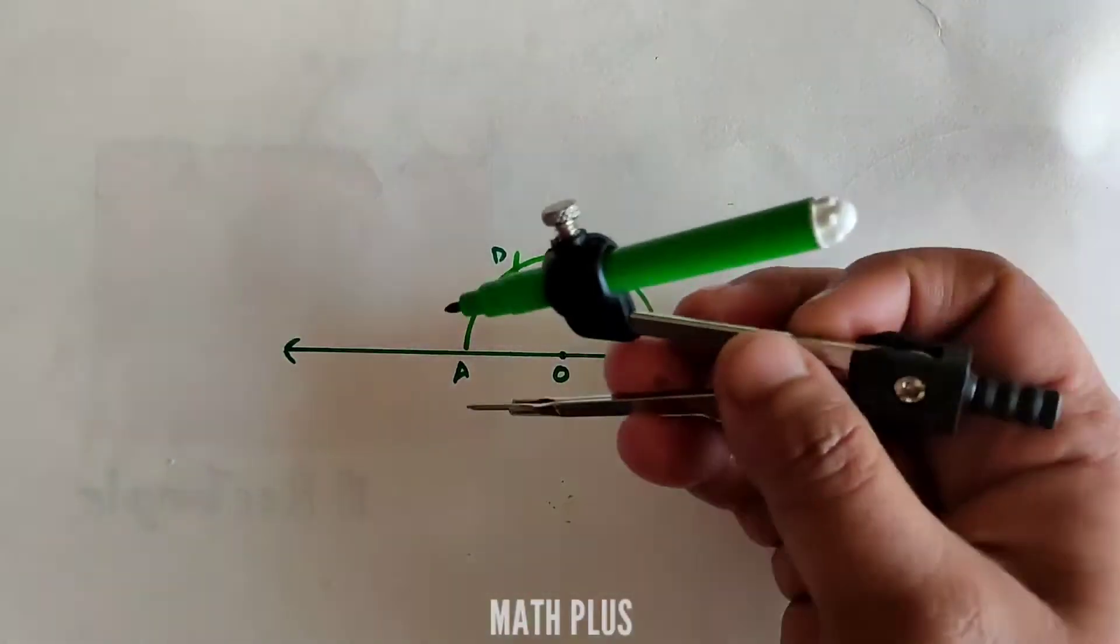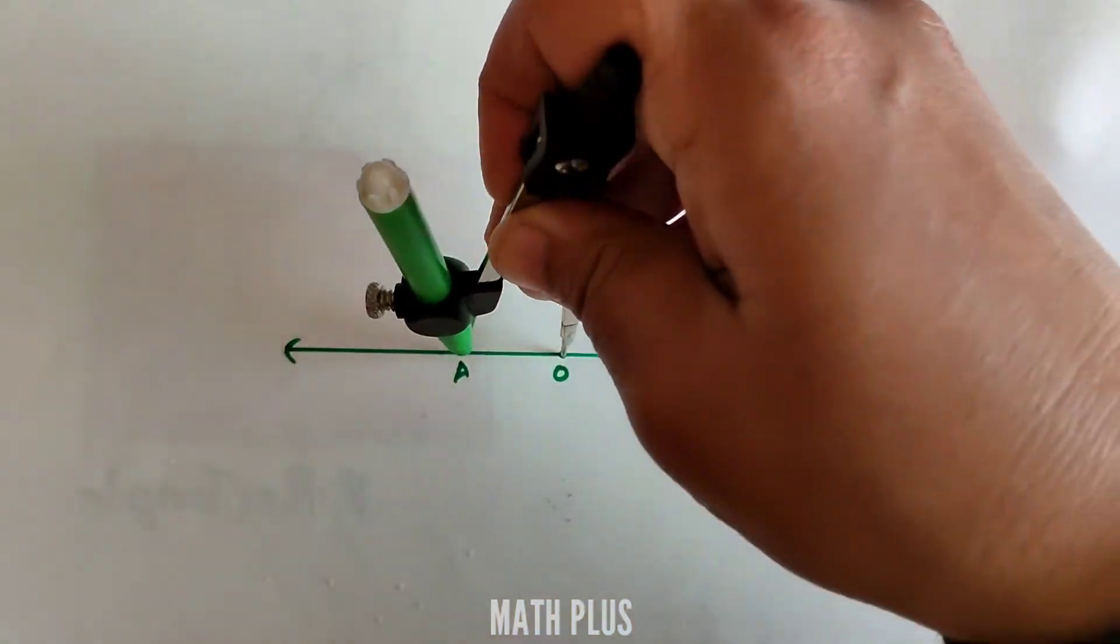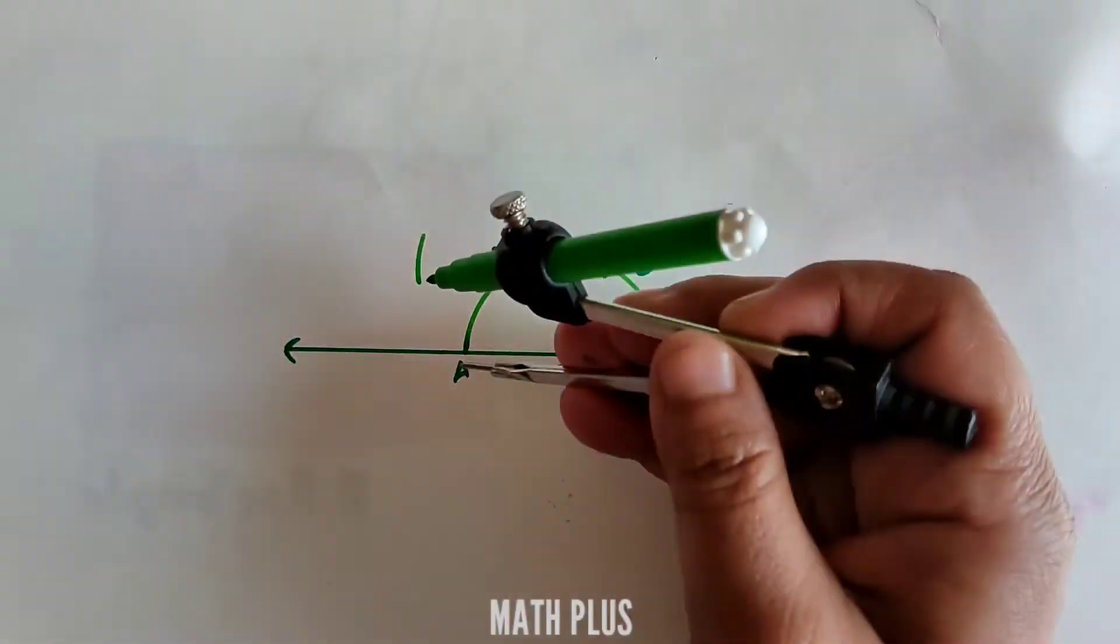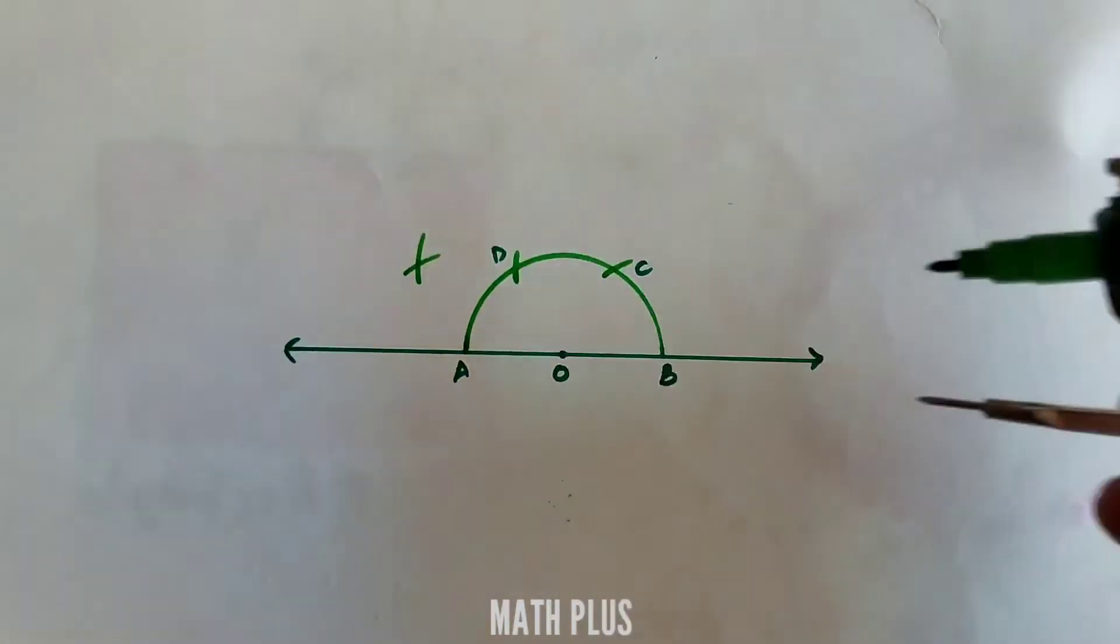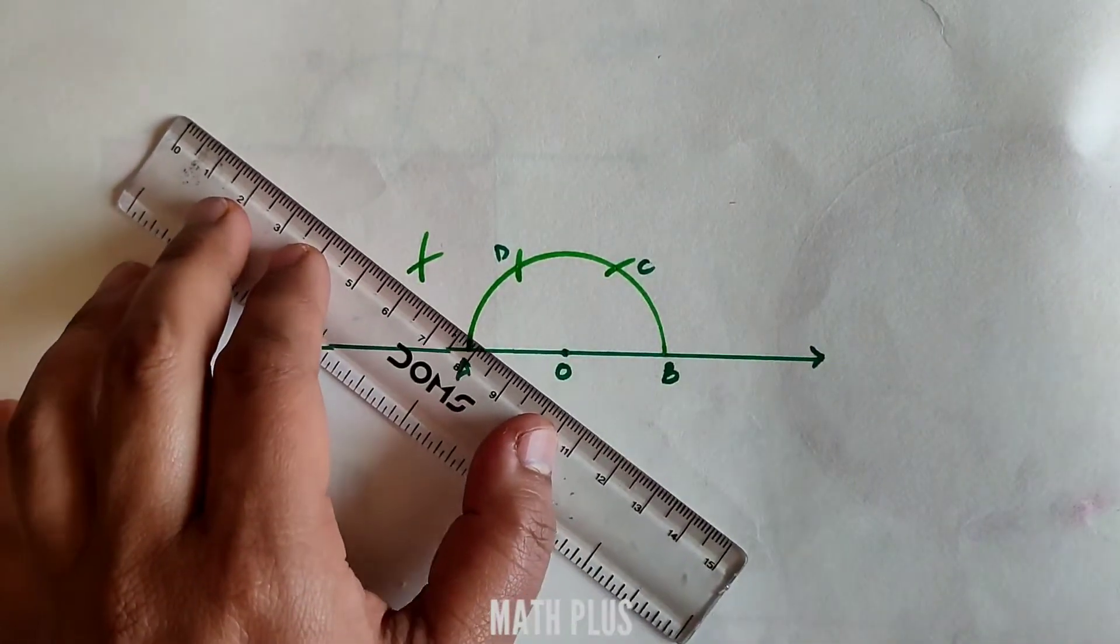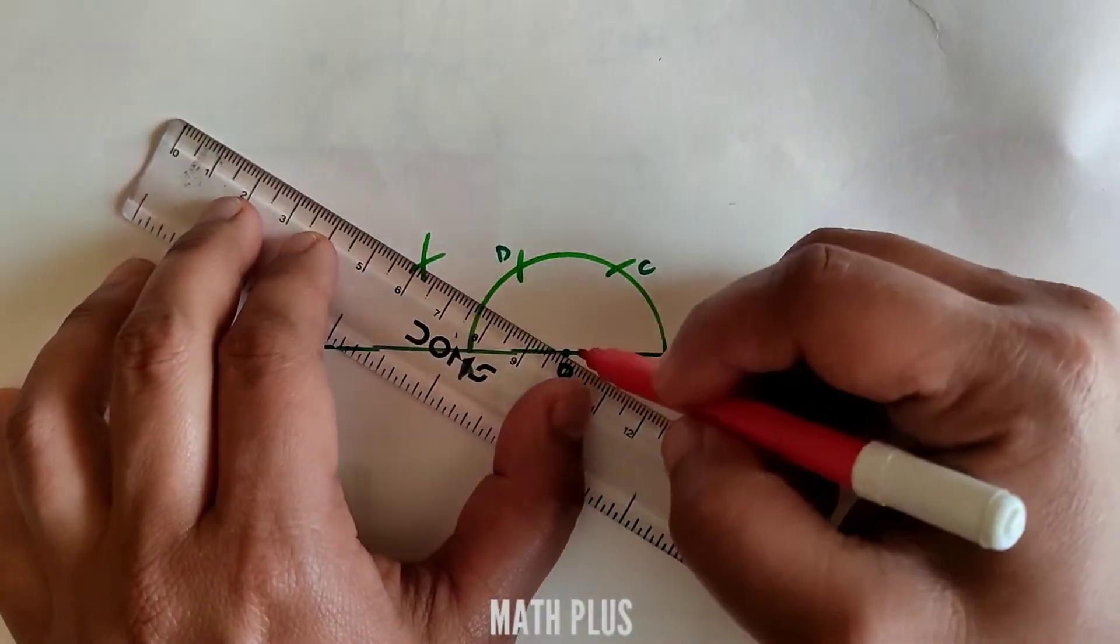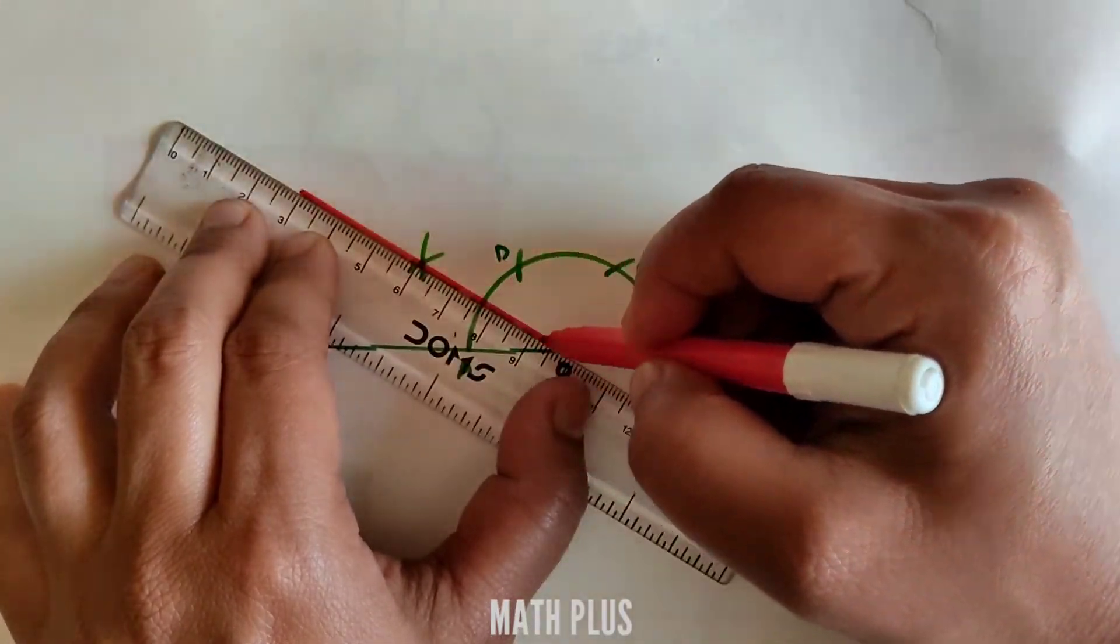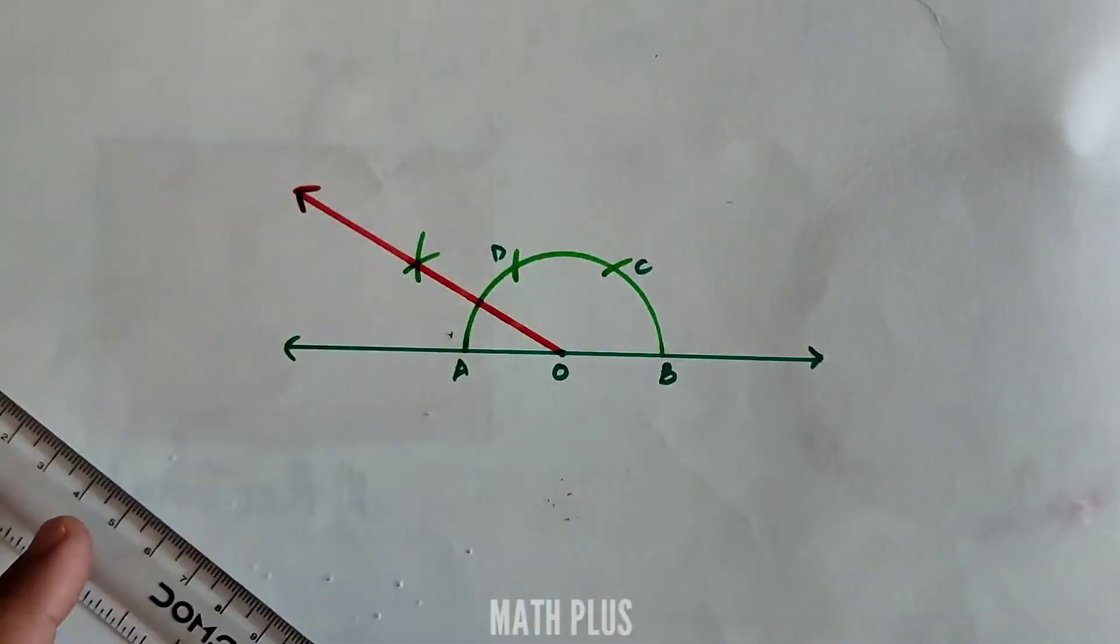The four points marked are A, B, C, and D. Now using the same radius from D and from A, mark two arcs intersecting each other. Now join O to the intersected arc using a straight ray.